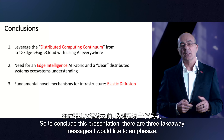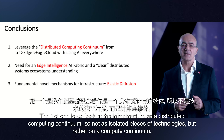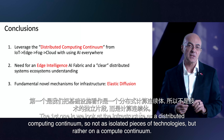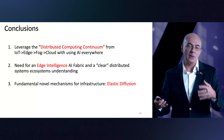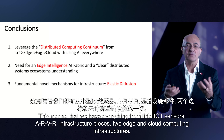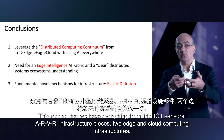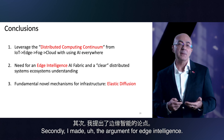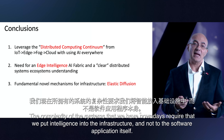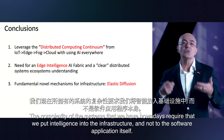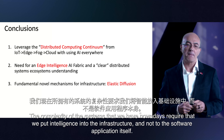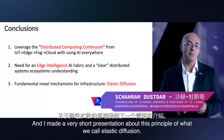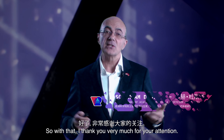To conclude, there are three takeaway messages. First, we look at the infrastructure as a distributed computing continuum — not isolated pieces of technology — spanning from IoT sensors and AR/VR infrastructure pieces to edge and cloud computing, all utilized together. Second, edge intelligence is essential: the complexity of modern systems requires that intelligence be put into the infrastructure rather than the software application itself. Third, we require fundamentally novel mechanisms for this infrastructure, exemplified by the principle of elastic diffusion. Thank you very much for your attention.